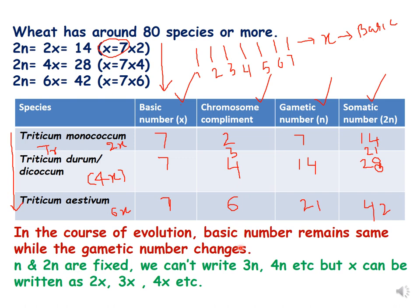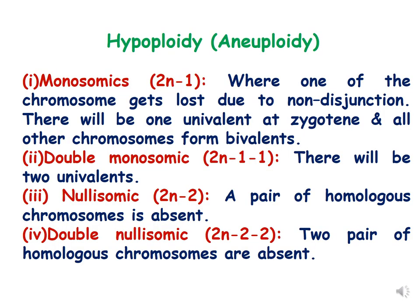You can see that the somatic number is always written as 2n, the gametic number as n, but the chromosome complement and gametic number are changing while the basic number remains constant. The first class of aneuploidy is hypoploidy. Hypoploidy is further classified as monosomics.